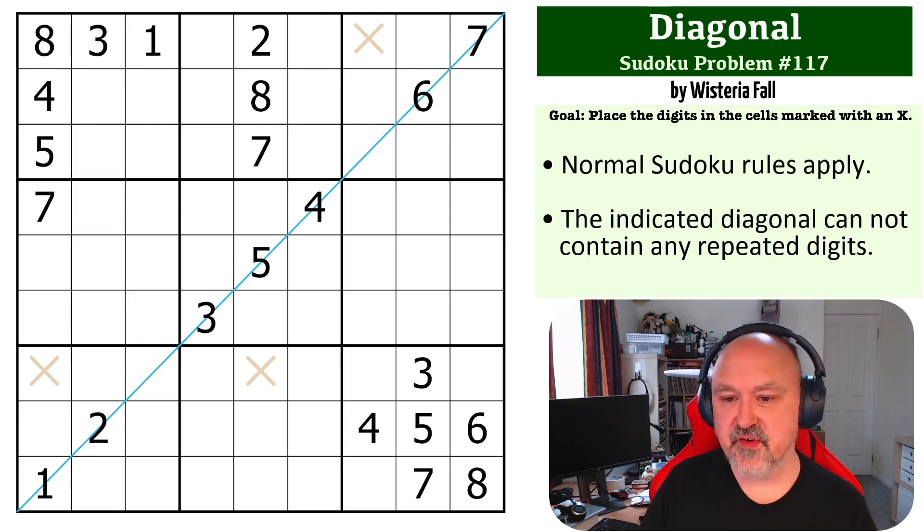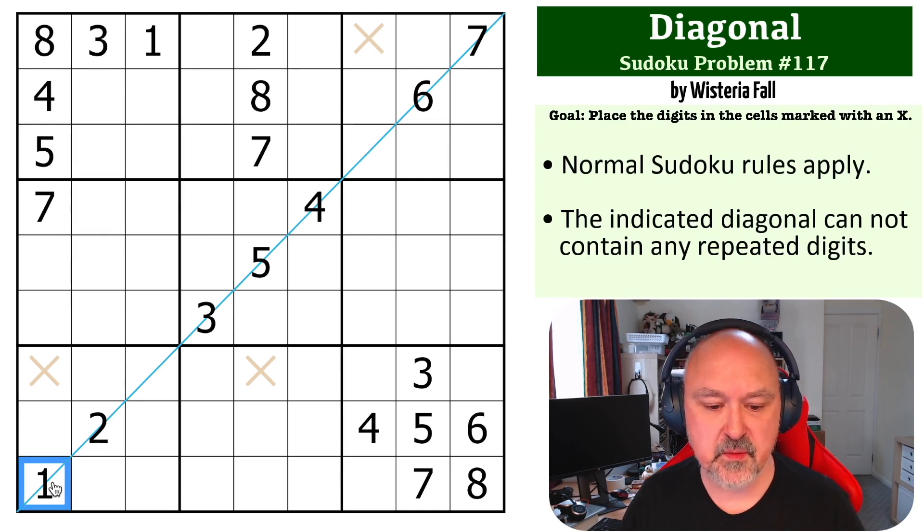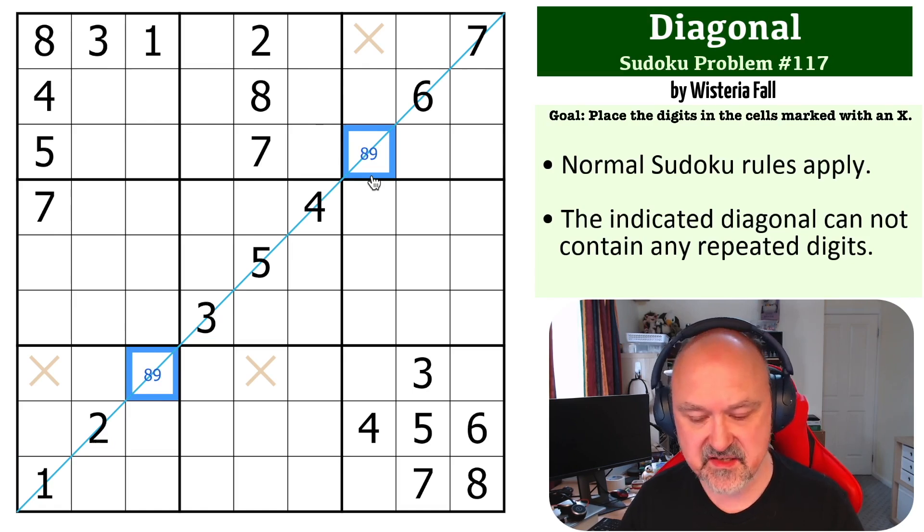Okay, I found this one a little bit tricky, and it took me a few minutes to find the way through. So the first thing we want to look at is the diagonal. We've already got 1, 2, 3, 4, 5, 6, and 7 on it. So these must be 8 and 9.